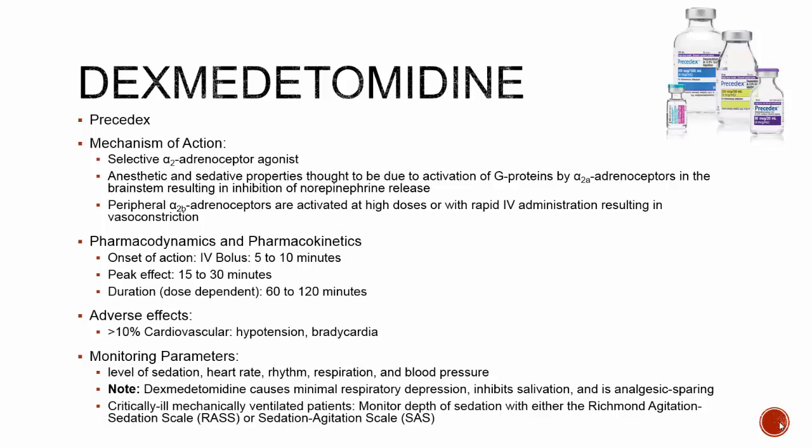Moving on to dexmedetomidine, otherwise known as Precedex: this is an alpha-2 adrenoreceptor agonist with both anesthetic and sedative properties, thought to be due to activation of G proteins on receptors in the brainstem, causing inhibition of norepinephrine release. It also has peripheral receptor activation at high doses and with rapid administration, which causes vasoconstriction.